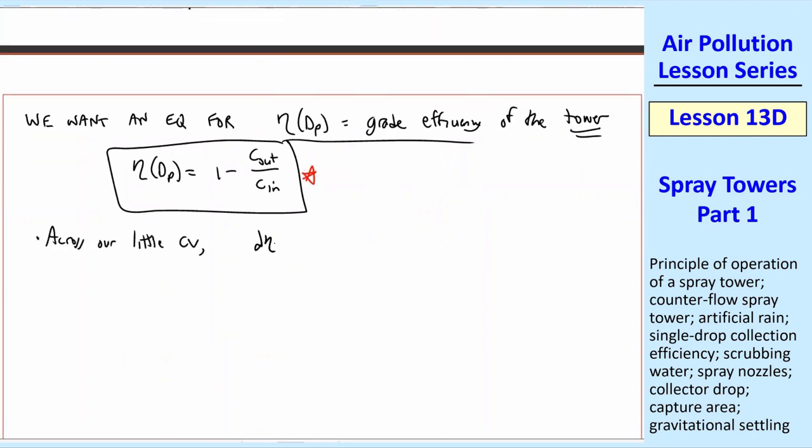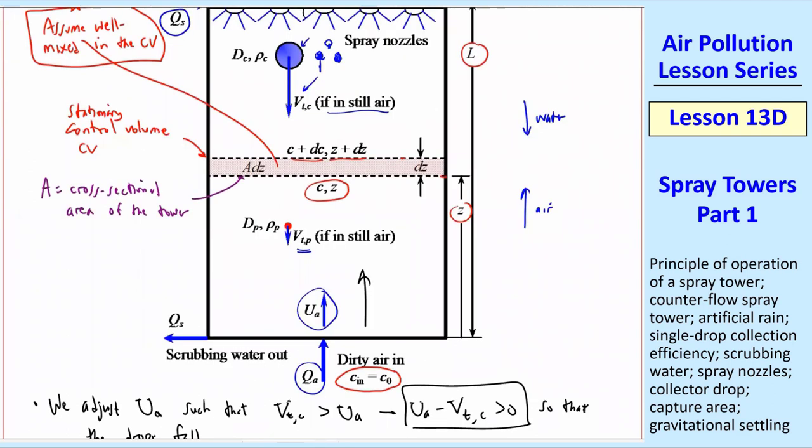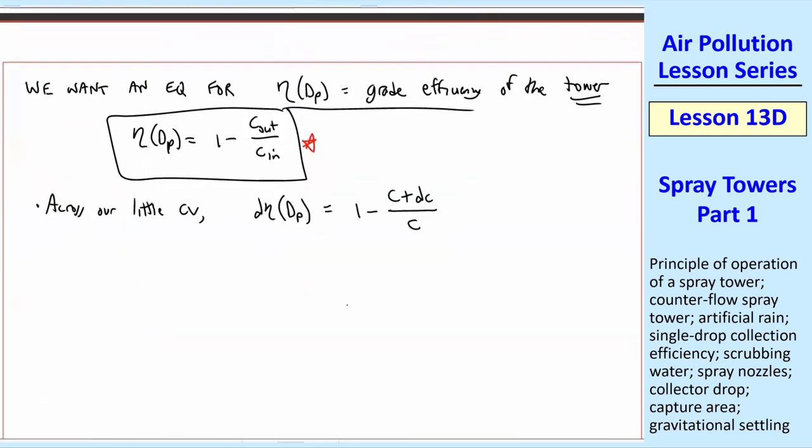Across our little control volume, we'll define d eta DP. Again, these are grade efficiencies, and as always, we're treating one diameter at a time, and then we just repeat for a range of particle diameters to get the grade efficiency curves. But all our algebra is just for one particle, as we always have been doing. So, d eta as a function of DP is 1 minus C plus DC over C.